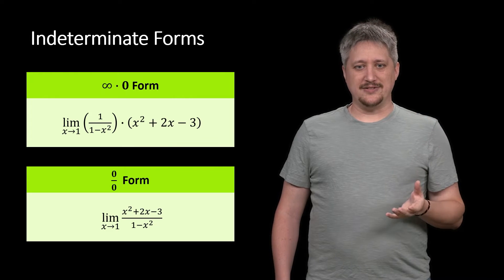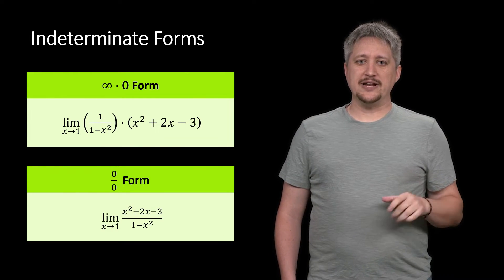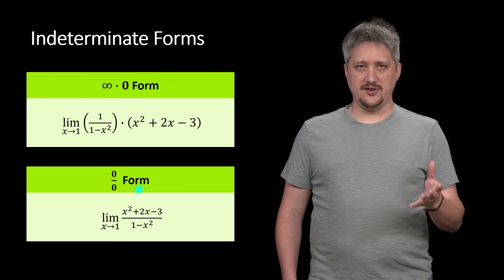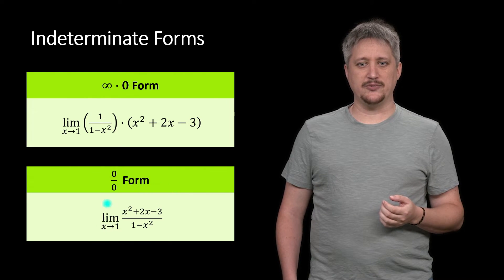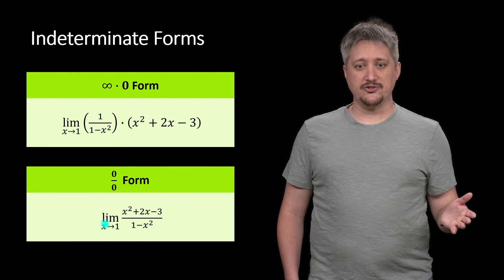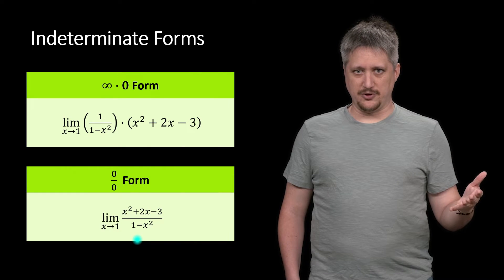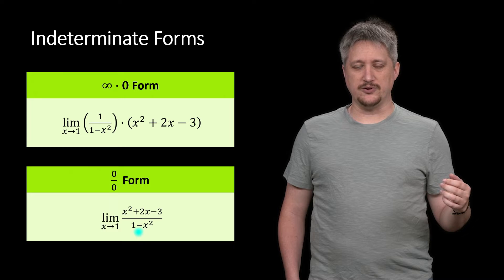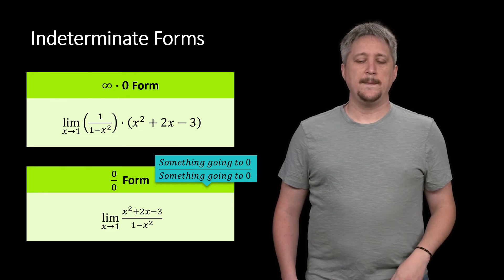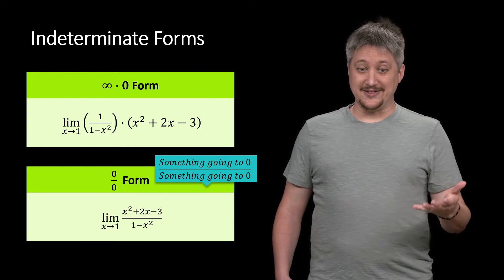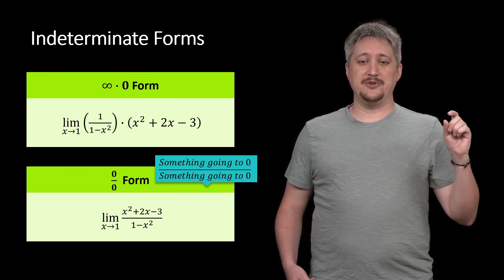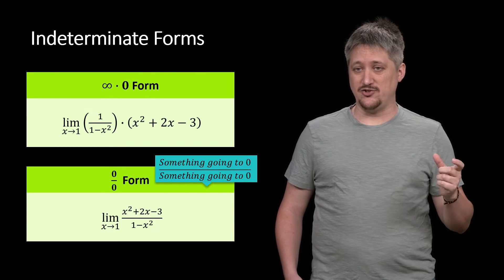Now if we manipulate the expression a little, because it looks a little weird the way I have it written initially, we can actually get another indeterminate form. This one is called the 0 over 0 form, and it's the same thing — I've just combined the two terms. I multiplied the right-hand side against the top and got this new fraction. If we try to plug in 1, we get something going to 0 on the top and something going to 0 on the bottom — but again, going to 0, not actually 0. This is another indeterminate form because dividing by 0 is trying to make something really large, but having the 0 in the numerator is trying to make it really small — the same sort of tension.